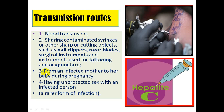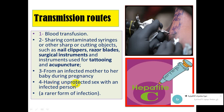Another route is from an infected mother to her baby during pregnancy. When a pregnant woman is exposed to hepatitis C virus during the first or second trimester, the virus can transmit to her baby. Additionally, unprotected sex with an infected person is a rare form of infection.